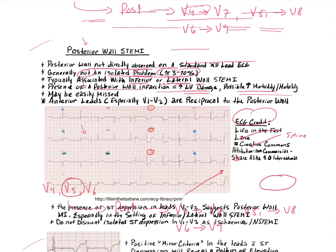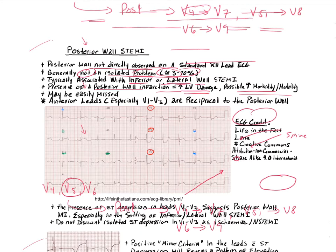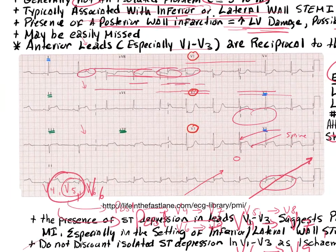I have an ECG image from the website Life in the Fast Lane, which has a Creative Commons license allowing educational use in non-monetized videos. Links to reference these 12-leads are in your notes. Let's zoom in and see what we can see — we'll start at leads 2, 3, and AVF.